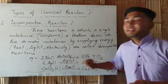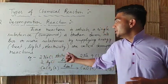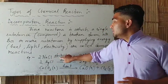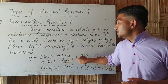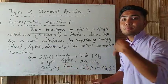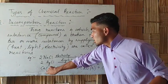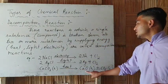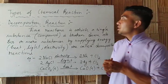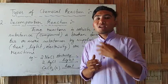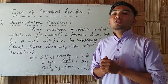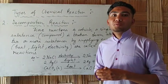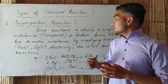For example, if you use energy, you can use light energy. If you use electricity, you can use light energy. If you use a single compound, you can use light energy. Next example, if you use heat, you can use a single substance or compound. If you use calcium carbonate, you can decompose it using a decomposition reaction with heat energy, light energy, and electrical energy.